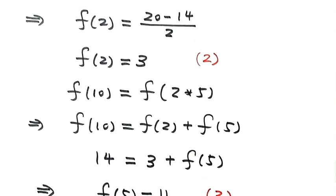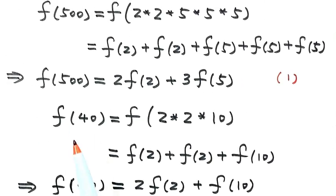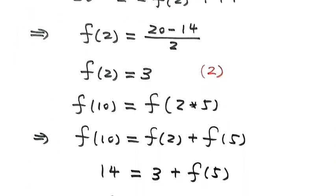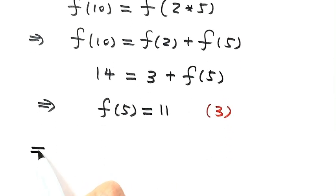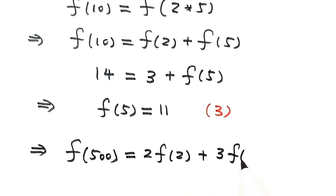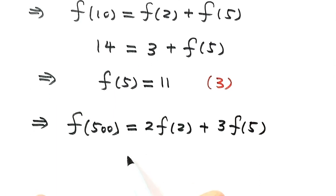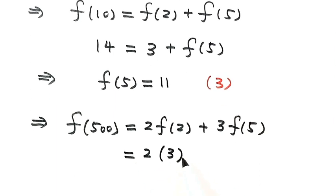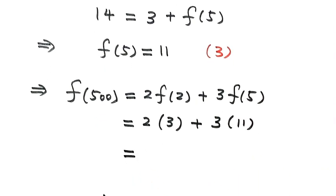Now let's find f of 500. From Result 1, f of 500 equals 2 times f of 2 plus 3 times f of 5. From Result 2, f of 2 equals 3, and from Result 3, f of 5 equals 11. So the answer for f at 500 equals 2 times 3 plus 3 times 11, which equals 39. Thanks for watching.